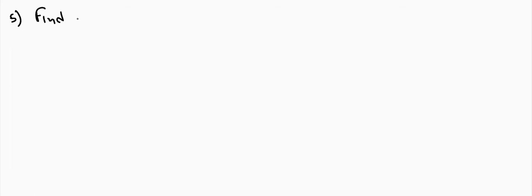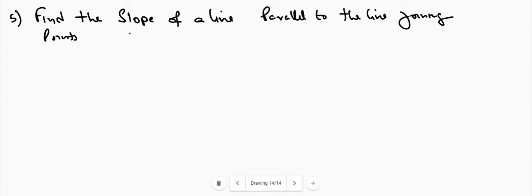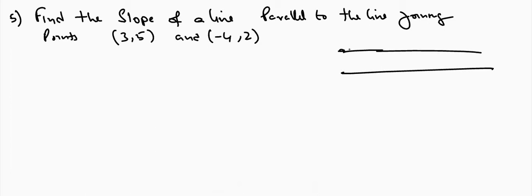Question number 5: find the slope of a line parallel to the line joining points (3, 5) and (−4, 2). We are going to find the slope of the required line, knowing that a line is parallel to it and passes through the two points (3, 5) and (−4, 2).